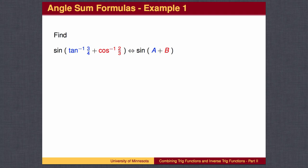What do we know about the blue angle? We know the tangent value is 3/4. From this information, we can label the right triangle, find the missing side by the Pythagorean theorem, and read off the values for sine and cosine.